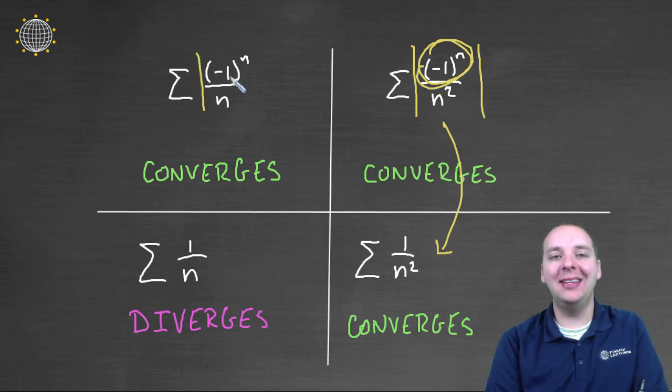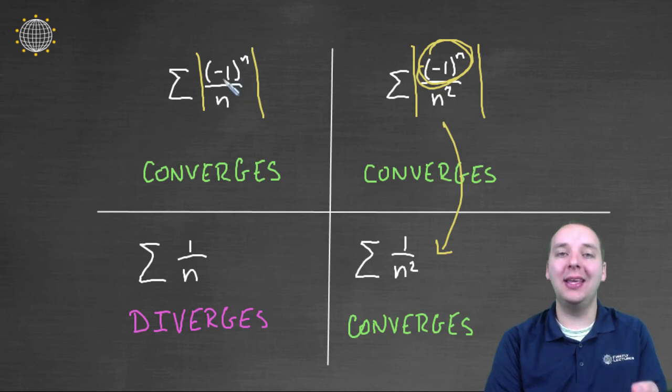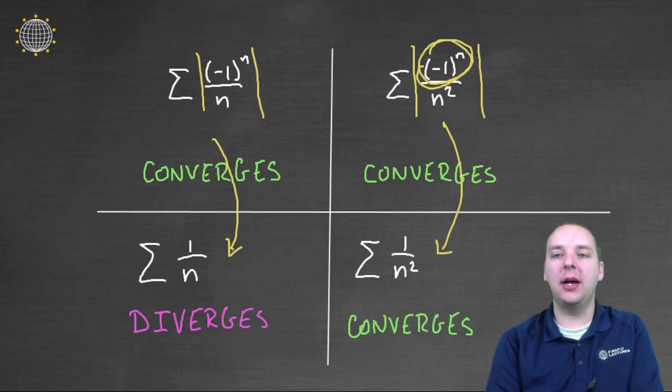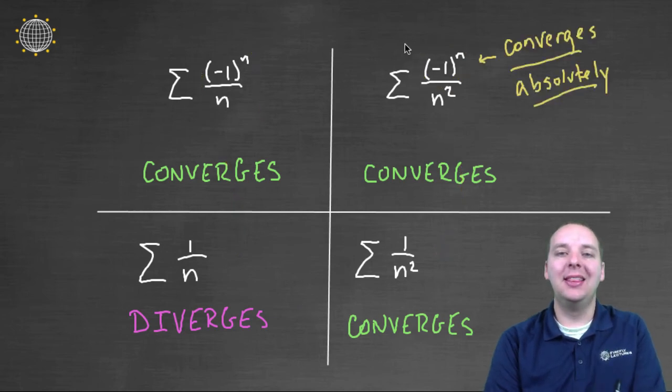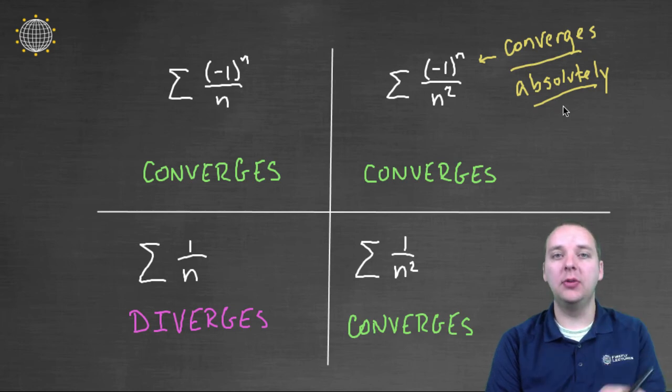But what if you took the absolute value of (-1)^n over n? If you took away his assistance, his alternating terms, and just made it one over n, you see he would diverge, on the other hand. So here's coming back to the original definition. This would converge absolutely, because if you took the absolute value of the terms that you're adding up, it would still converge. So it converges absolutely, even if you didn't have the alternating terms.